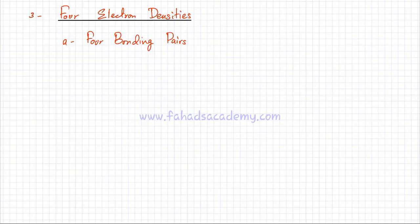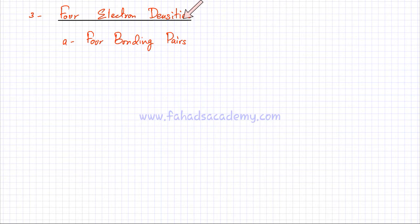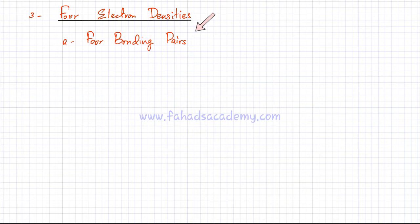In this video lecture, we're going to discuss the case, shape, and angles of a molecule if there are four electron densities. Four electron densities could be lone pairs, bonding pairs of electrons, double bonds, or triple bonds. The first case we're going to look at is where a molecule has four bonding pairs of electrons around an atom.